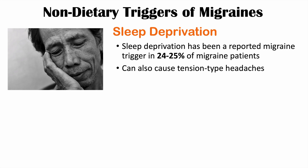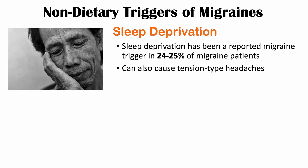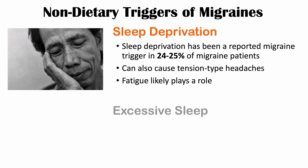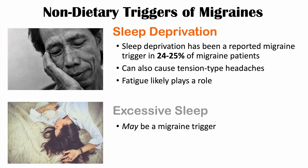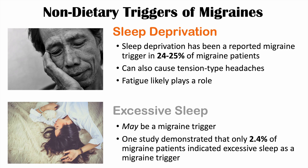Sleep deprivation is also known to cause tension-type headaches — that band-like pattern around the head, bilateral and not pounding like migraines. Fatigue likely plays a role here. On the opposite side of the spectrum, excessive sleep may also lead to migraine headaches, though it is a possible trigger in only a very small percentage of patients — roughly 2.4% of migraine patients indicated that excessive sleep triggered their migraine. So sleep deprivation is the more significant trigger at about a quarter of patients, while excessive sleep is very rare.